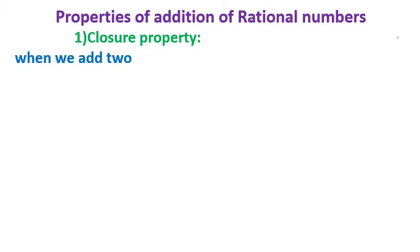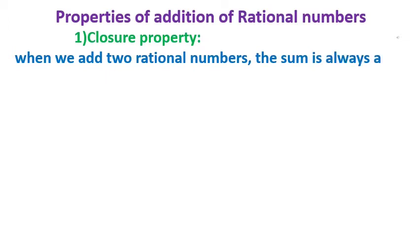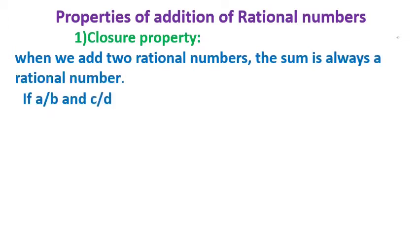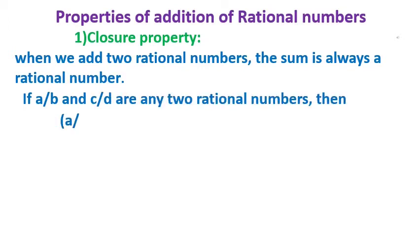Closure property. When we add two rational numbers, the sum is always a rational number. If a/b and c/d are any two rational numbers, then a/b plus c/d is also a rational number.